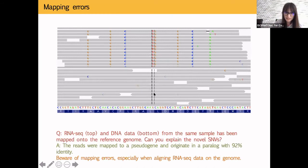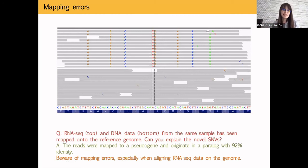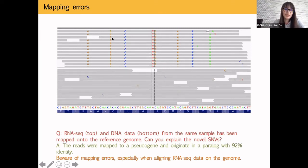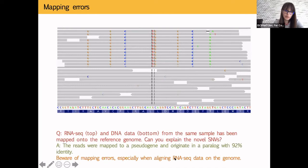So when you see this pattern, before assuming it's real, you need to rule out that it's a mapping error. In this case, it is just a mapping error: reads are coming from one site but being mapped to both because they're very similar. You have to be especially careful with mapping errors in RNA-seq data.